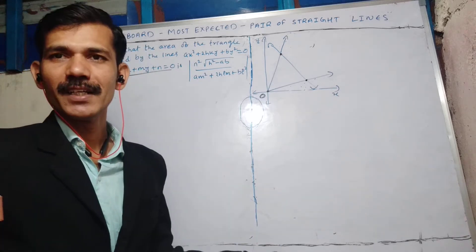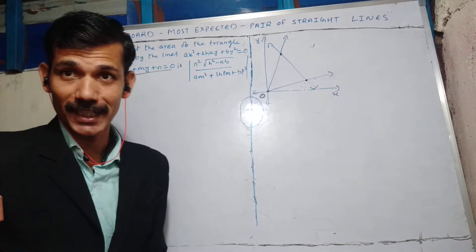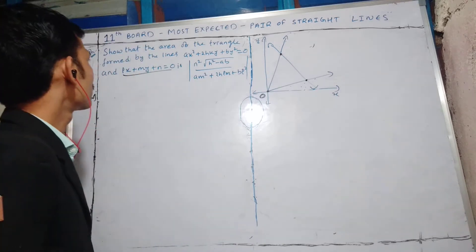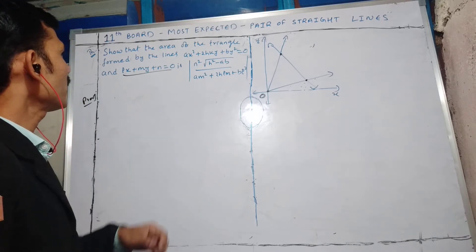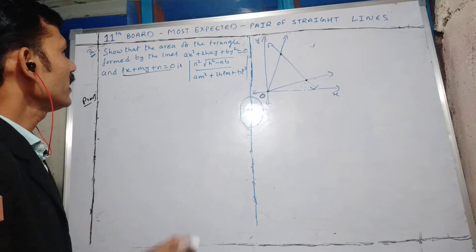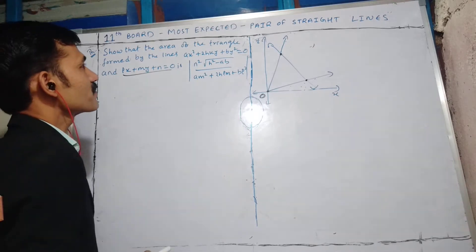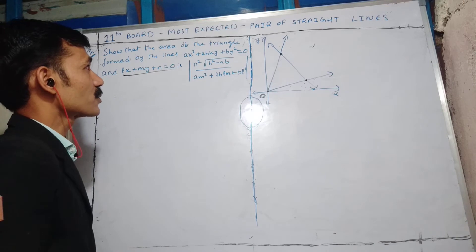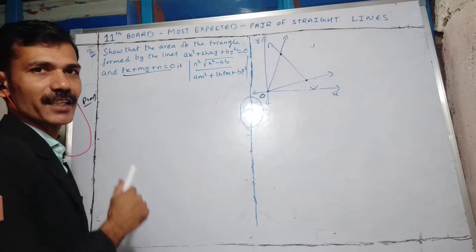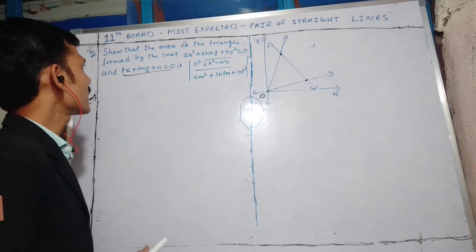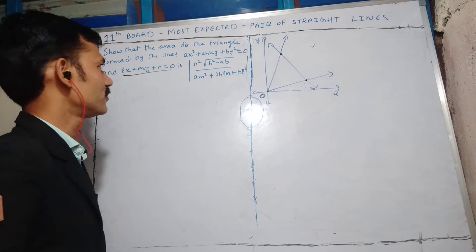Welcome to all. Let us solve a theorem in the pair of straight lines chapter. We have to find the area of the triangle formed by a pair of straight lines Ax² + 2Hxy + By² = 0 and a straight line Lx + My + N = 0.